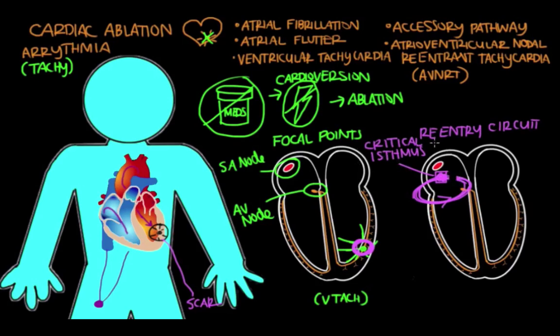The critical isthmus is always the most narrow area of tissue that's safe to ablate. The cardiologists stay clear of important structures that are imperative for electrical conduction. They only want to terminate the problem areas.